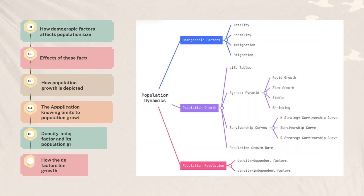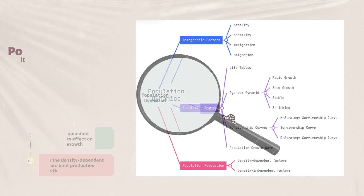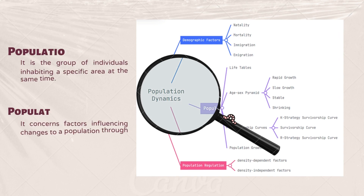How demographic factors affect population size, effects of these factors, how population growth is depicted, the application of knowing limits to population growth, the density-independent factor and its effect on population growth, and lastly, how density-dependent factors limit population growth.